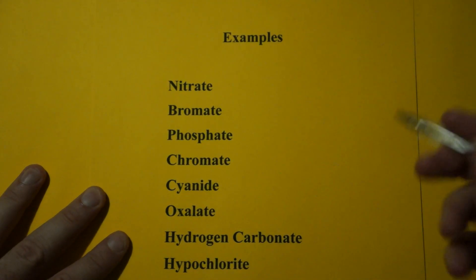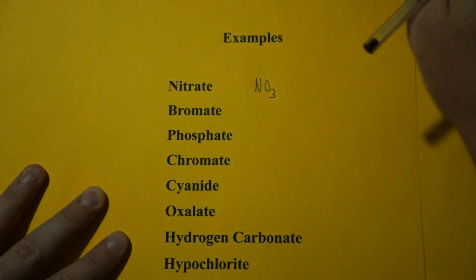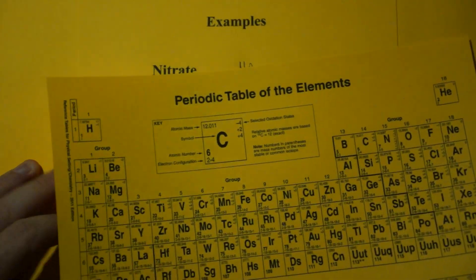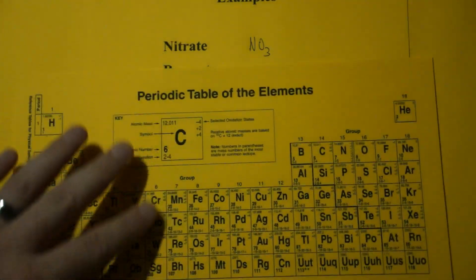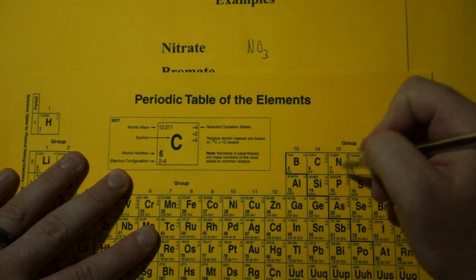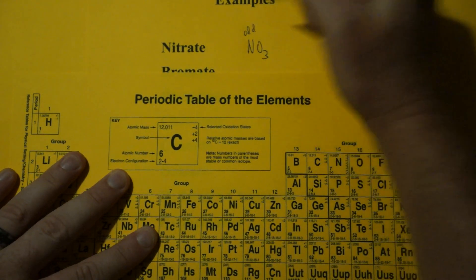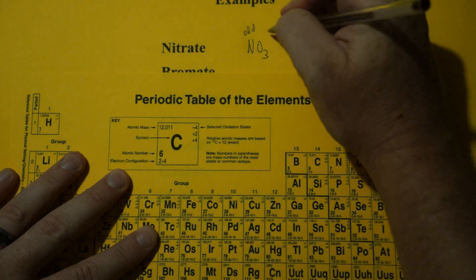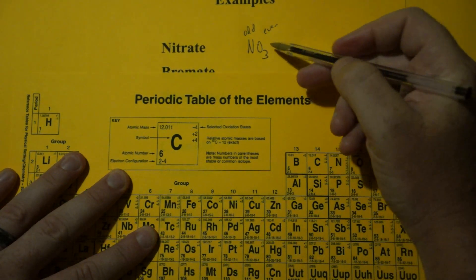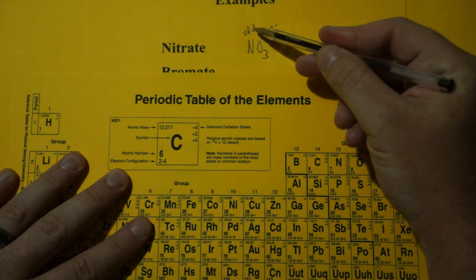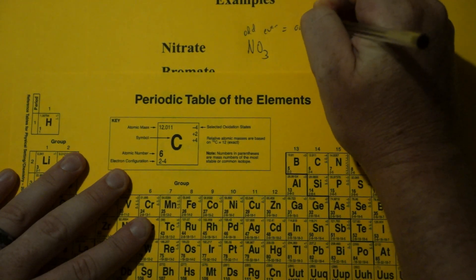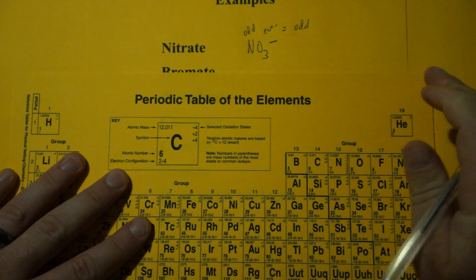So I have nitrate. Nitrate I know is NO3. Now let's figure out the charge. Nitrogen is in group 15. That's an odd group. So that's odd. Oxygen in group 16. That's even. So an even, three evens is still even plus an odd is an odd. So this total is odd, which means the charge is going to be minus 1.